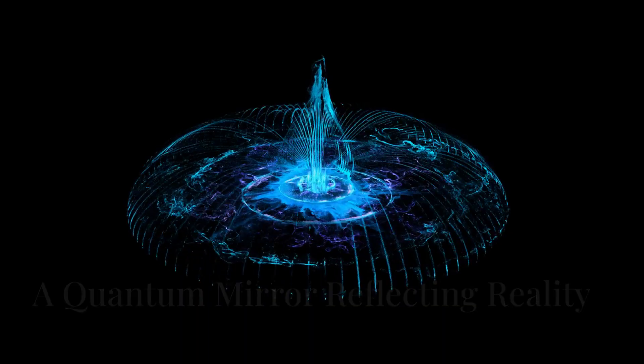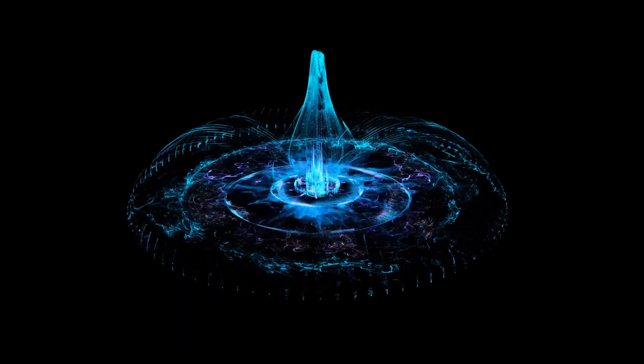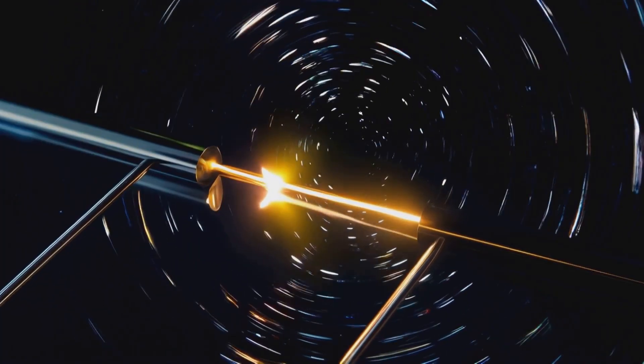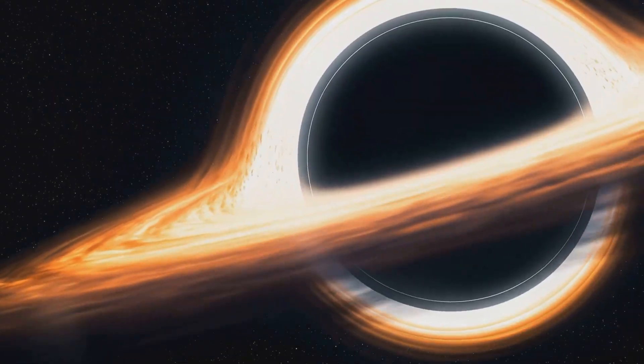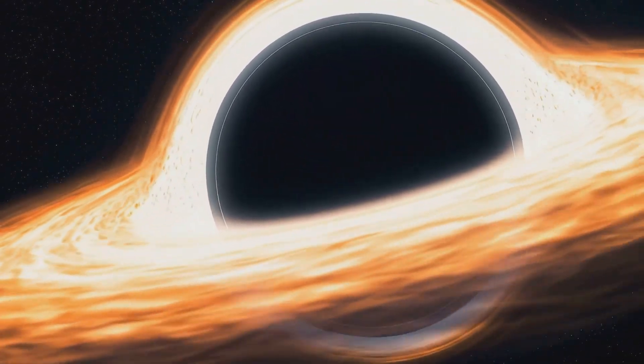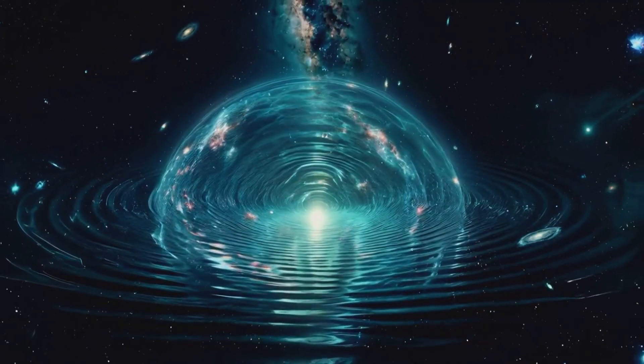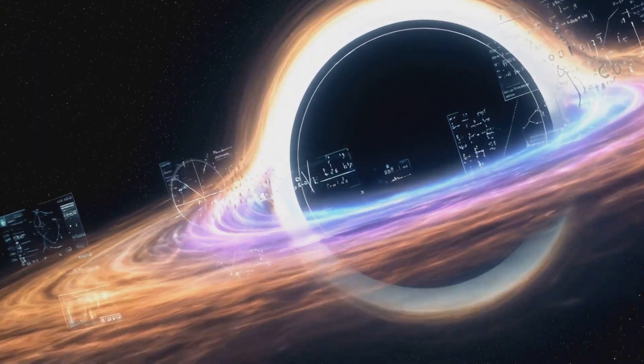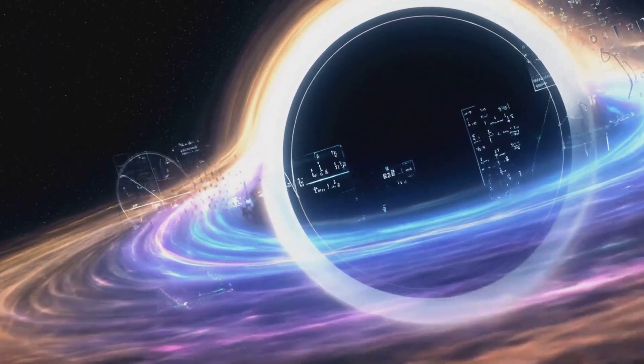Section 5: The Event Horizon, a quantum mirror reflecting reality. Black holes, the universe's most enigmatic objects, hold a special place in QIH. Their event horizons, the points of no return, act as cosmic interfaces between the holographic projection of our universe and the underlying information realm.